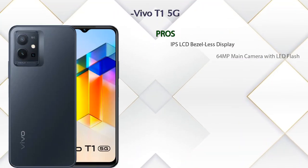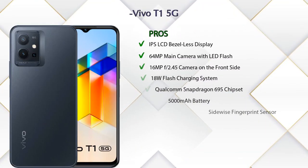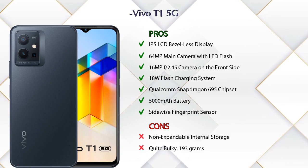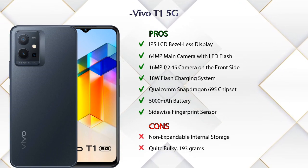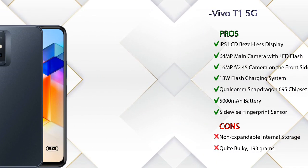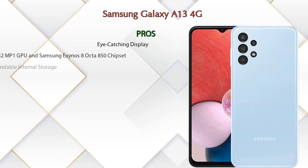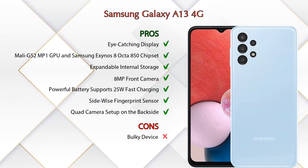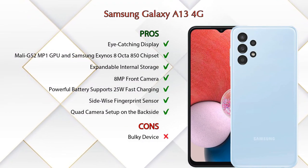Now let's talk about pros and cons. The Vivo T1 5G has seven pros and two cons. The Samsung Galaxy A13 4G has seven pros and one con.